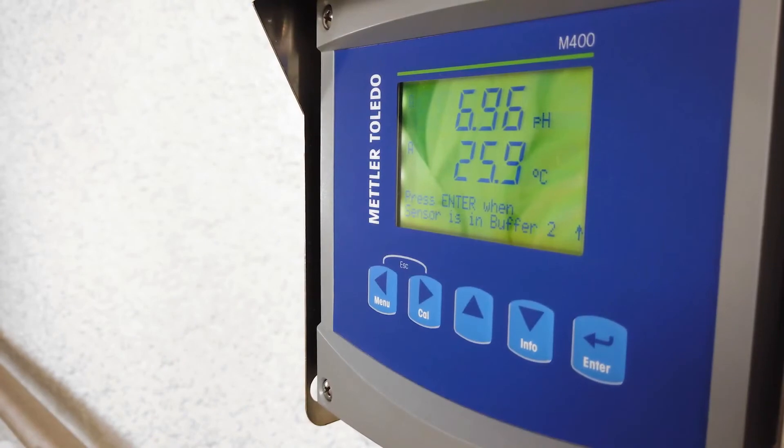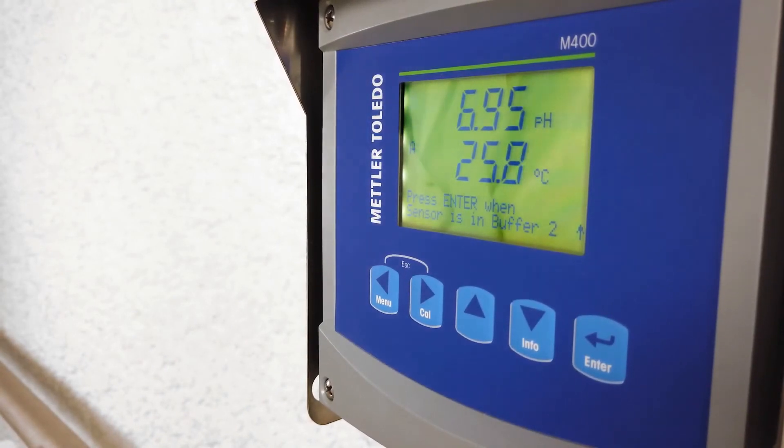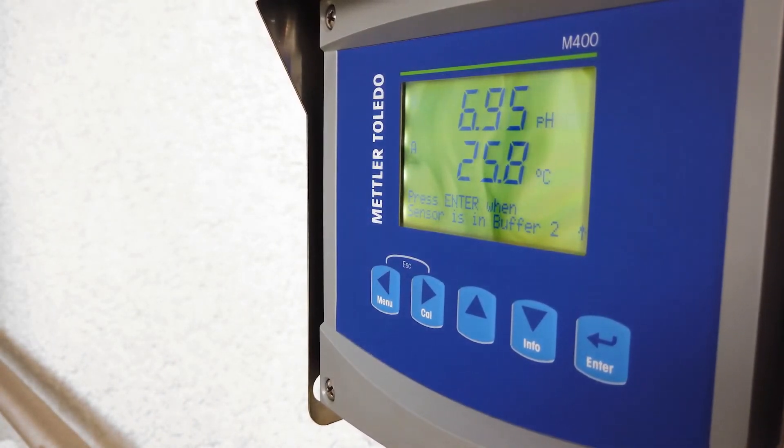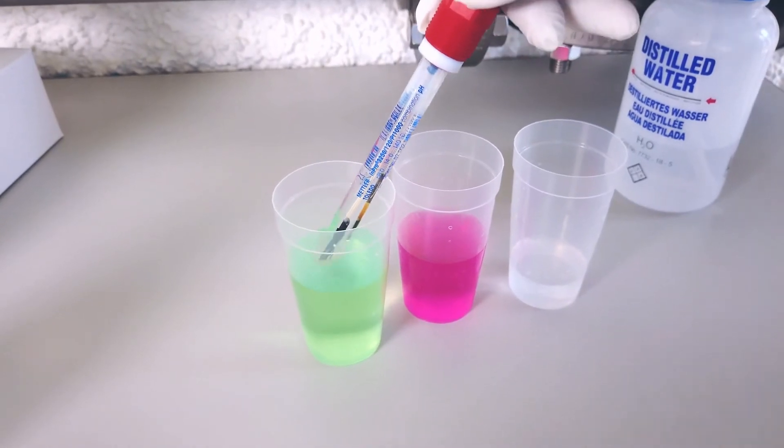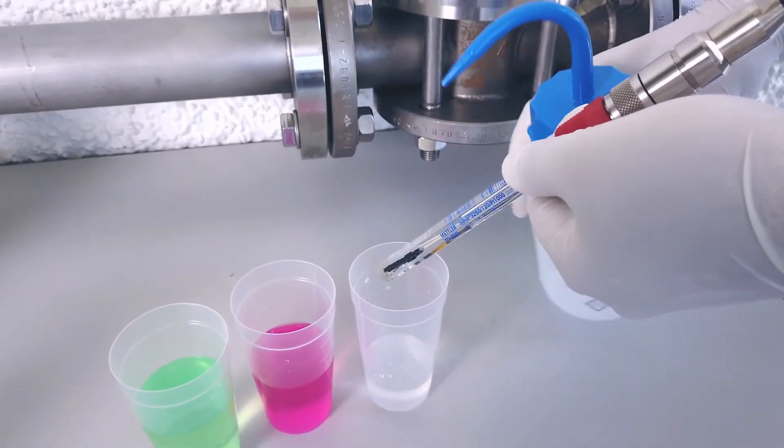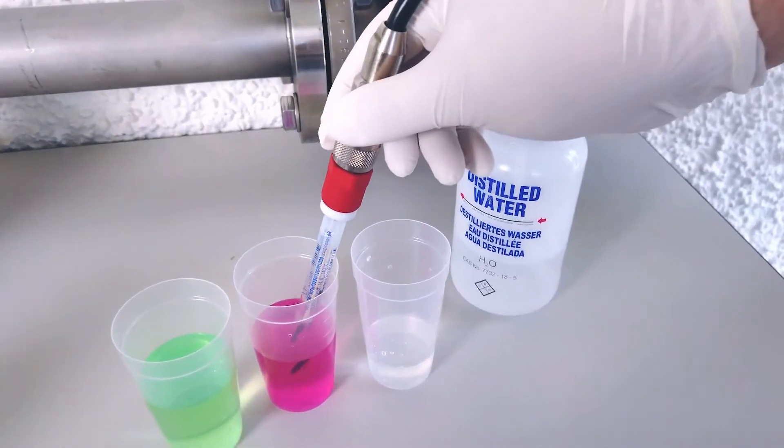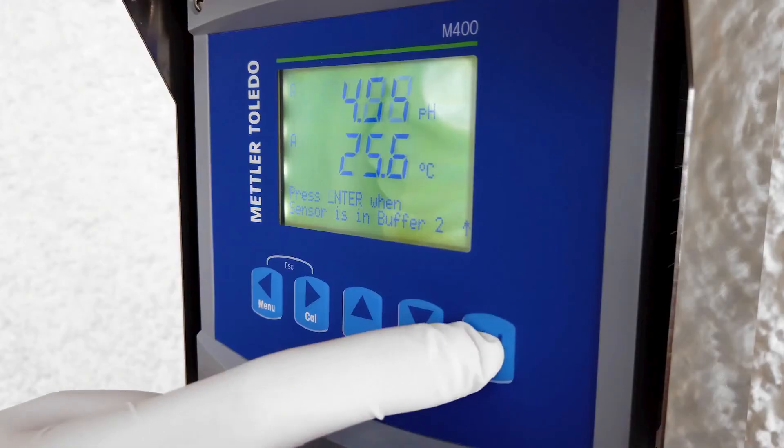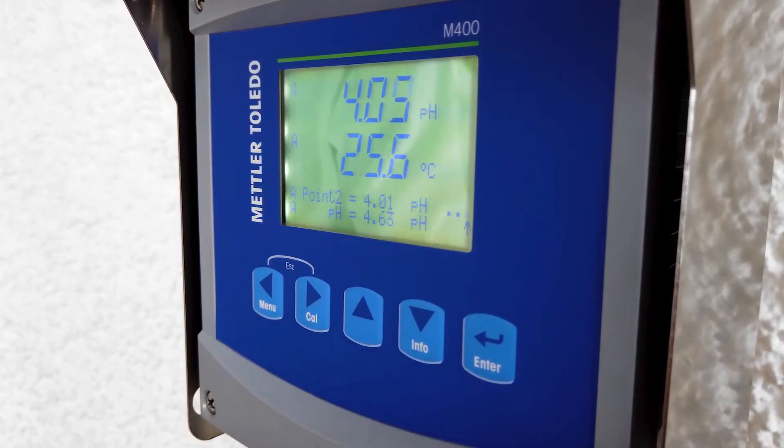Now the transmitter instructs you to put the sensor into the second buffer. In this case, it's pH 4. Remove the sensor from the first buffer, rinse it again with distilled water, pat it dry, and place it into the second buffer. Press the enter button to do the calibration.